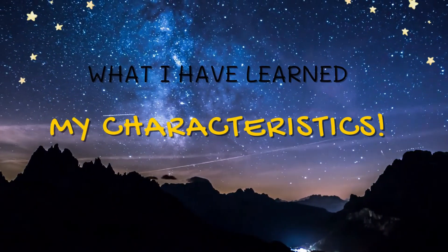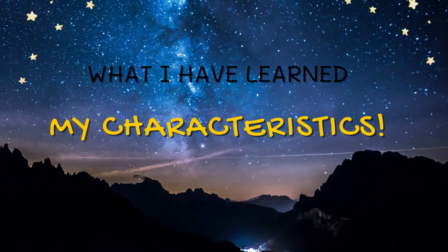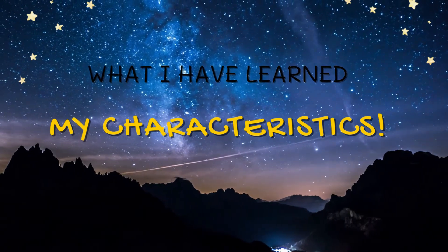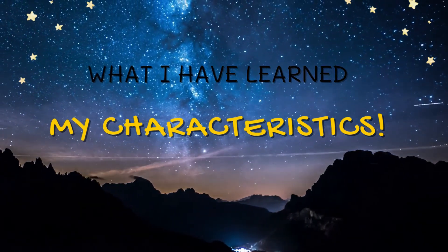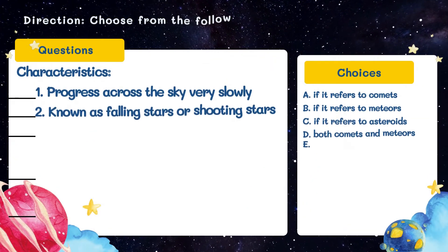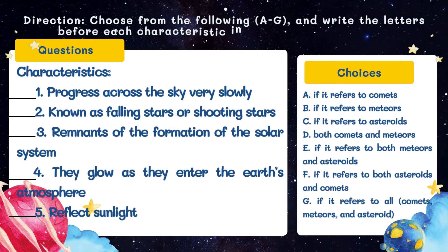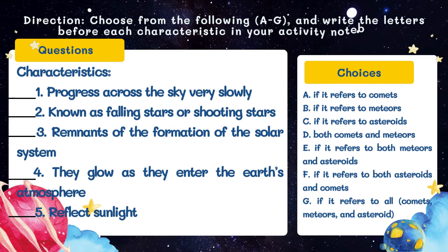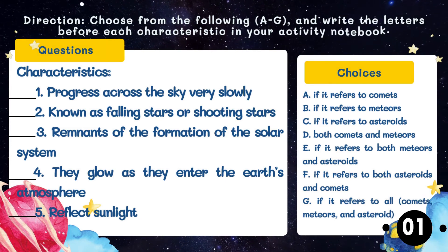Now, after exploring asteroids, comets, and meteors, test yourself to see if you can compare and differentiate the three. Let us answer 'What I Have Learned: My Characteristics' to see how well you understood. Here are five characteristics of comets, meteors, and asteroids. Choose from the following choices, A to G, and write the letter before each characteristic in your activity notebook. We will check your answer after 30 seconds. You can start now.